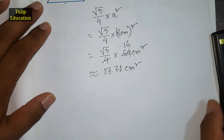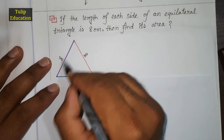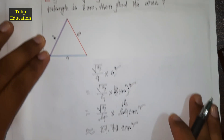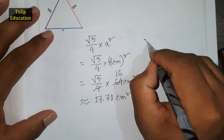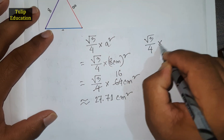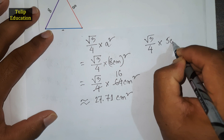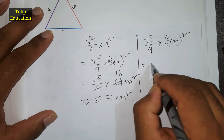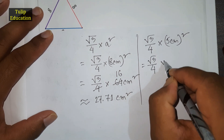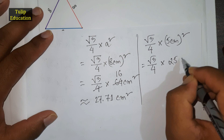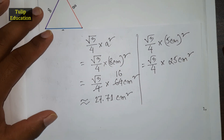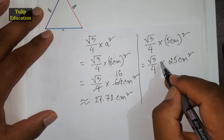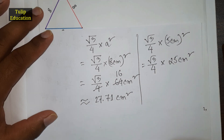Now if the value of one side is 5 centimeters, the result will be root 3 divided by 4, into 5 centimeters whole squared. If we calculate, that gives root 3 divided by 4, multiplied by 25 centimeters squared. We divide 25 by 4, then multiply with root 3 to get our result.